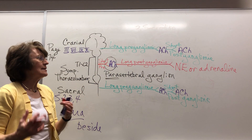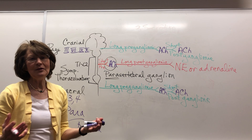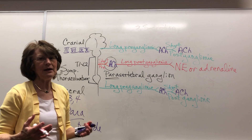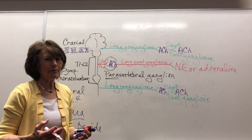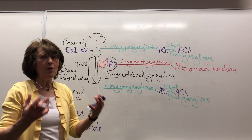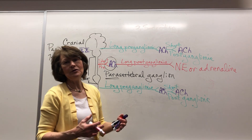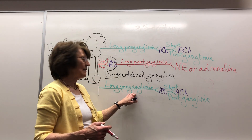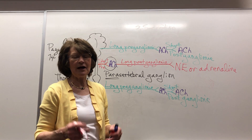The neurotransmitter there is norepinephrine, or adrenaline. What's it going to do to the heart? Adrenaline is going to speed up the heart rate. What will it do to the bronchi? Open them up — to allow you to do fight or flight. Parasympathetic, of course, is for rest and digest.